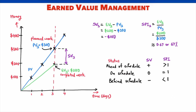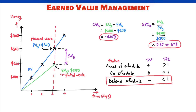In our example, schedule variance is negative, minus $100. SPI is 0.67, less than 1 — we are behind schedule. Schedule variance and SPI seem to be doing a good job; we know we are behind schedule, but by how much?